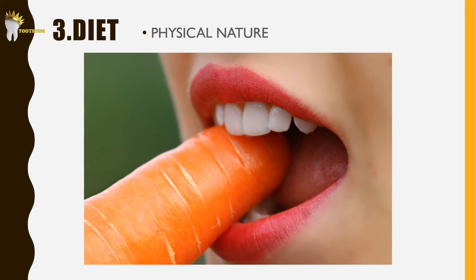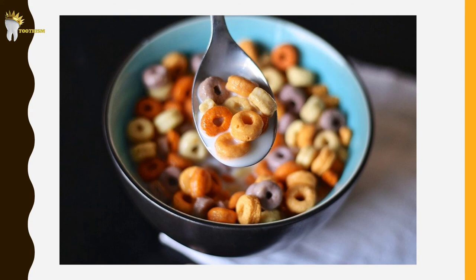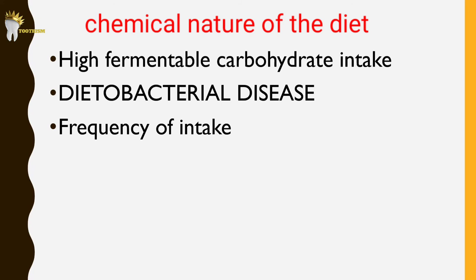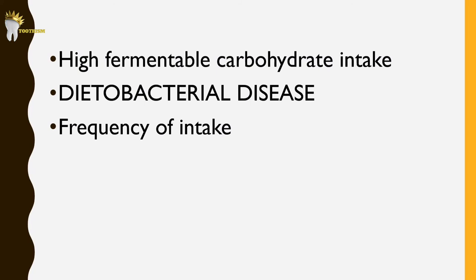The third factor is diet. The physical nature of the diet affects caries: when the diet includes lots of raw foods, proper chewing aids cleansing of debris from teeth and lowers caries incidence. But modern diets of refined food and sugary beverages increase debris collection and caries incidence. The chemical nature is also important — a diet high in fermentable carbohydrates leads to caries, and dental caries cannot occur in the absence of dietary fermentable carbohydrates. That's why it's called a dito-bacterial disease. Frequency of intake also matters: frequent snacking between meals leads to higher caries incidence.